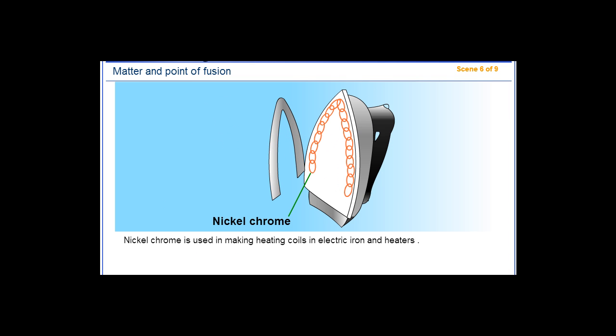Nickel chrome is used in making heating coils in electric irons and heaters.